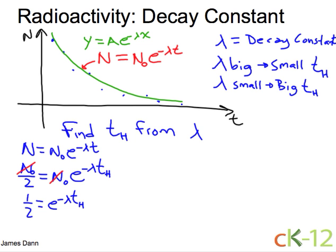And now what we'll do is we'll take log of both sides. Well, log of the exponential, that's just minus lambda t_h. And then on the other side we have log of one-half.